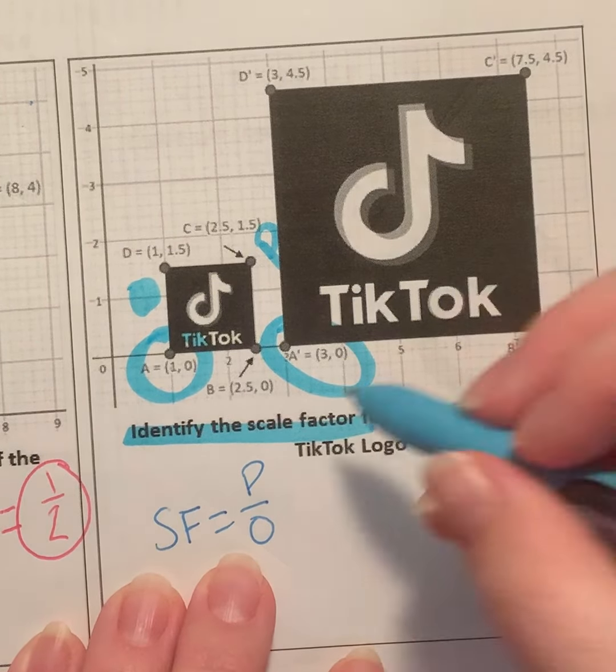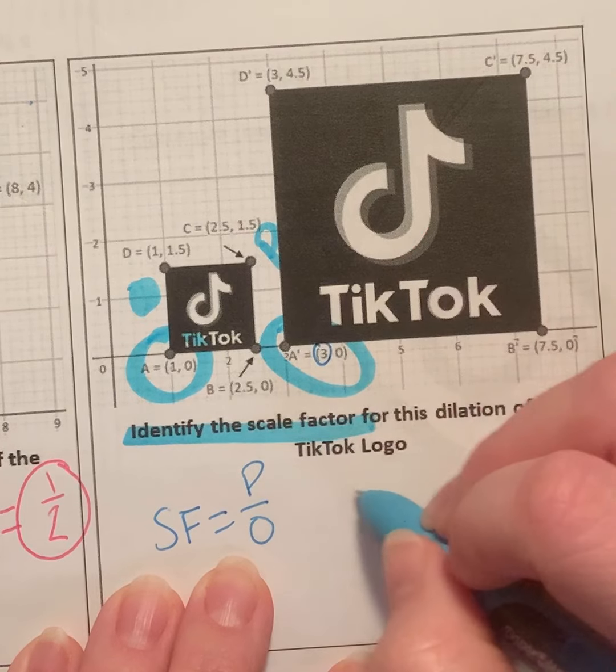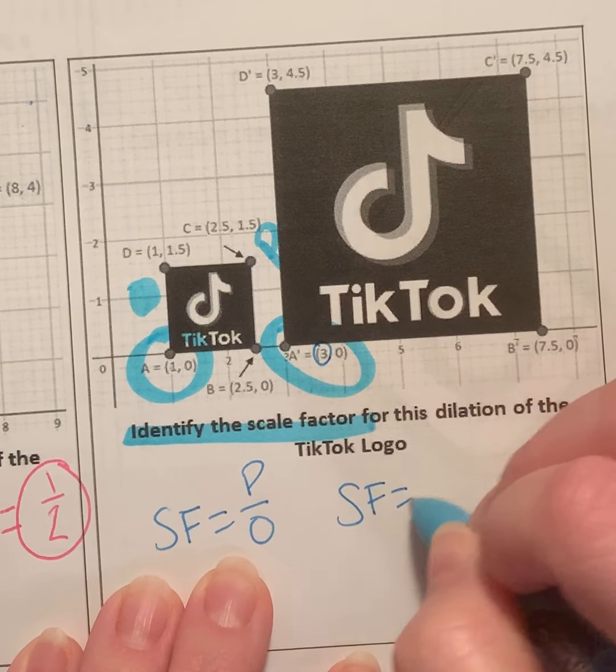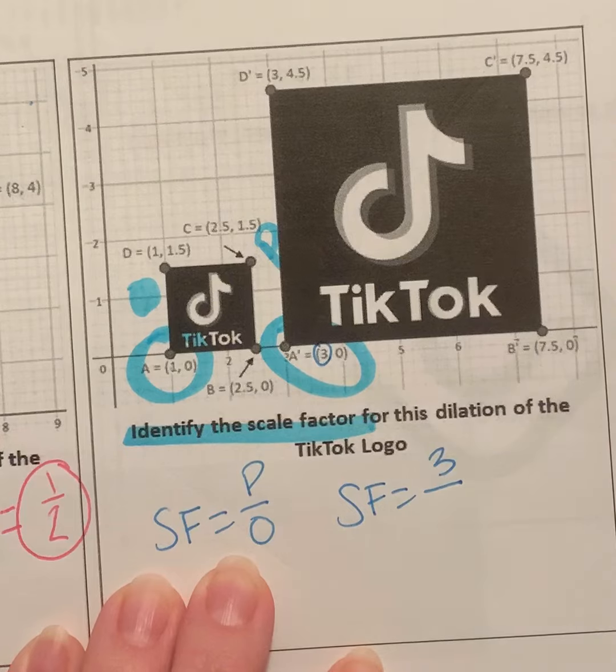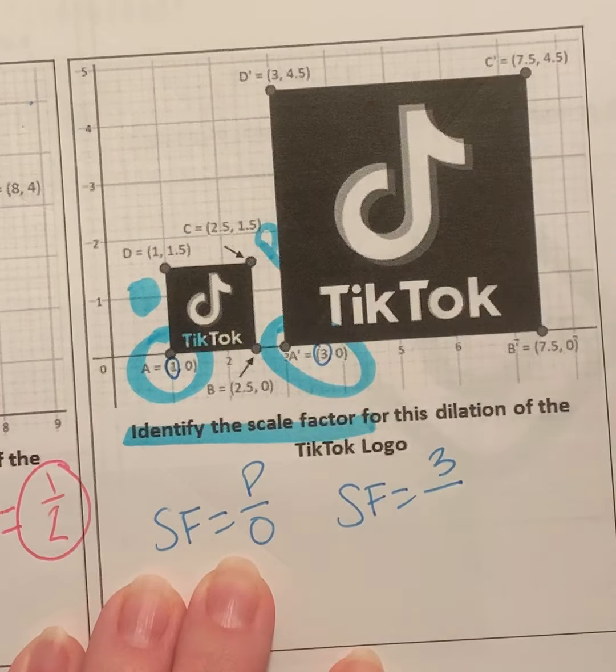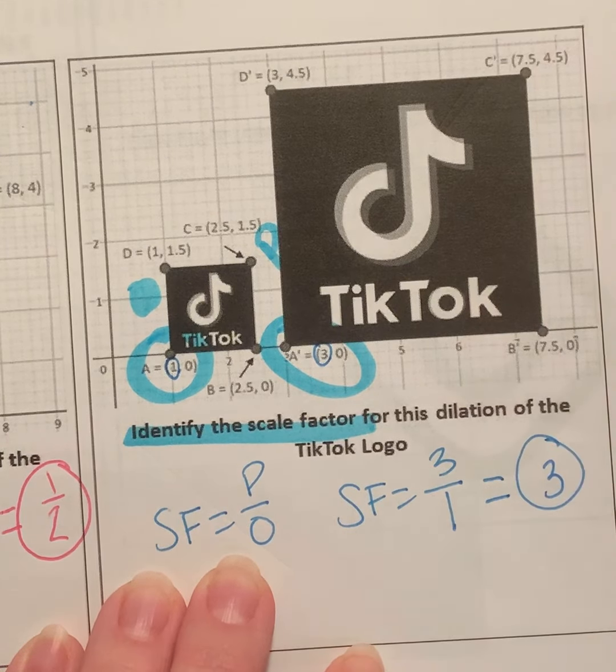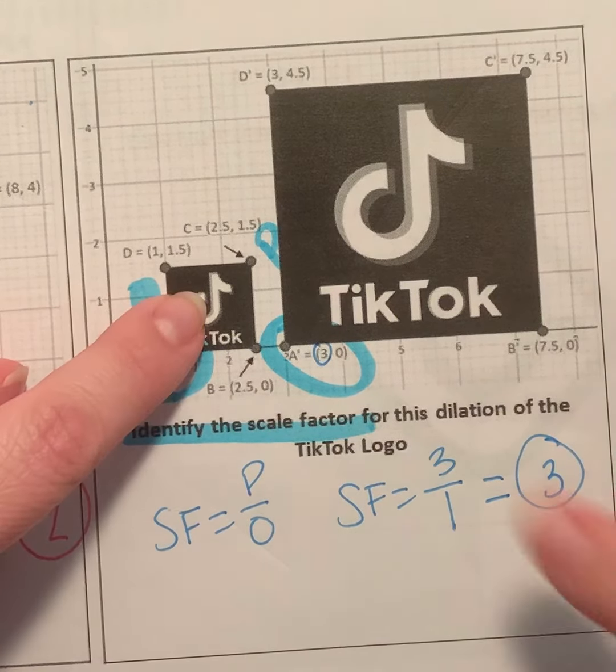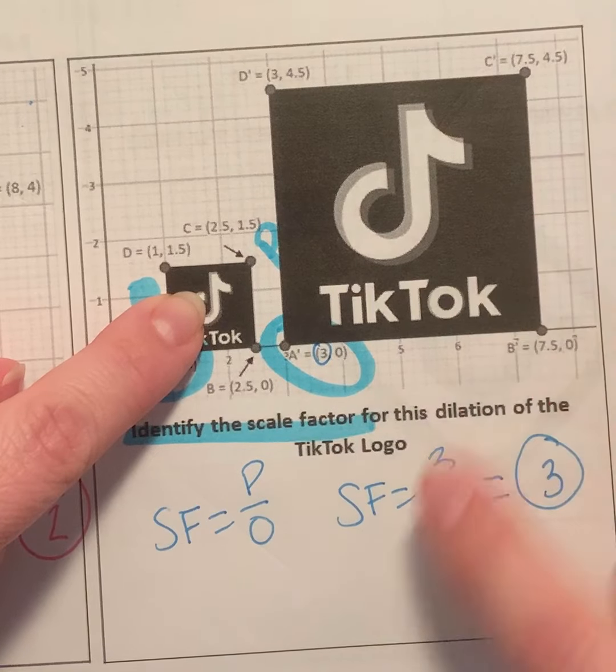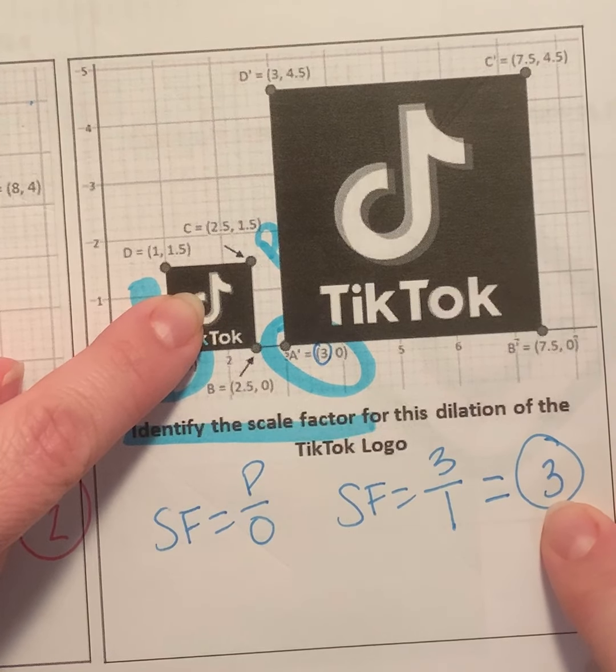So we're going to put the prime value of three over the original value of one. That tells me that my scale factor was three, meaning to go from this image to this image, it all grew by a scale factor of three.